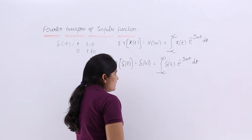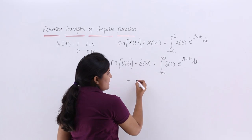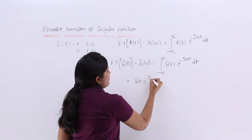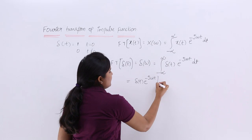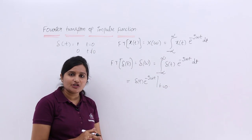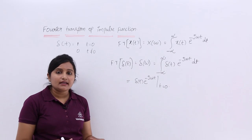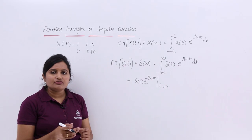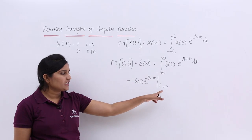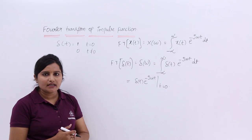So we can write this integration as simply evaluating δ(t) · e^(−jωt) at t = 0. Whenever a delta function is inside an integration, you just evaluate the remaining function at t = 0 — you will get the value of that integration directly. We solved a couple of problems using this property when discussing the properties of the impulse function.